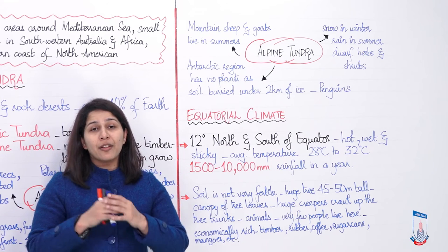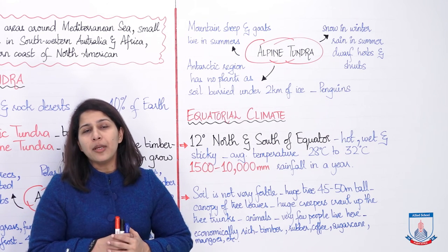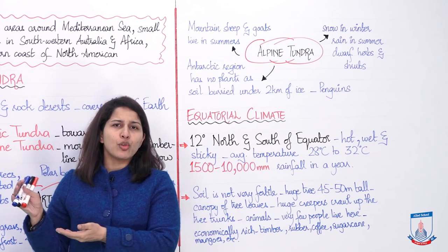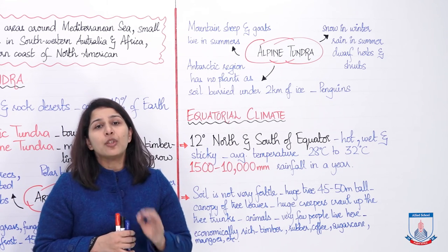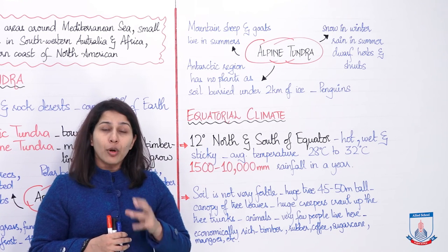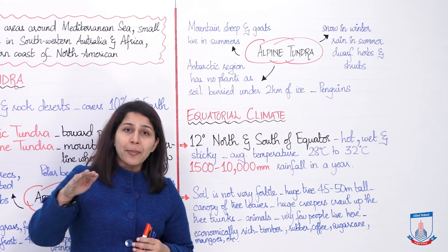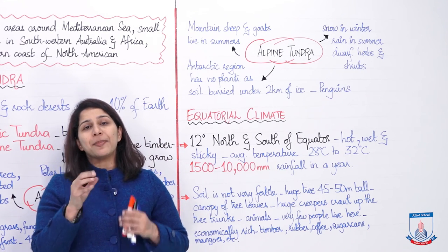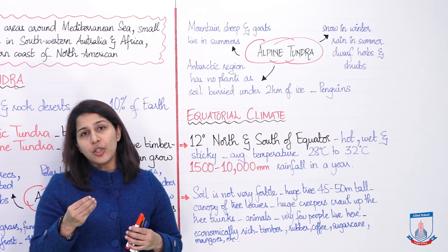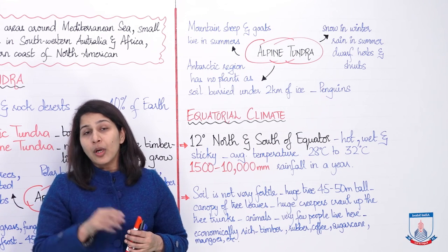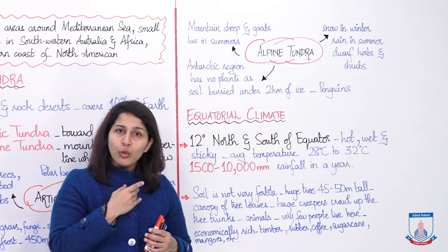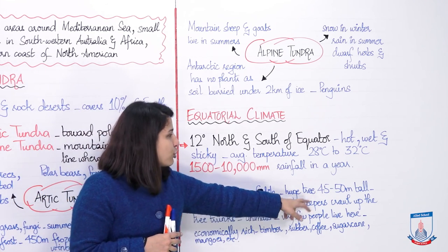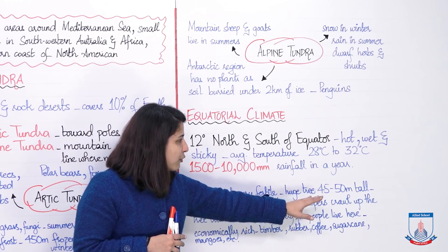Jab zyada se zyada baarish hoti hai, toh baarish ke paani ke saath jo top soil hoti hai woh beh jaati hai. Top soil mein saare minerals aur zaruri cheeze hoti hain jisse plants grow karte hain. Jab itni rainfall hogi toh woh top soil beh jaayegi — isliye the soil is not very fertile. Sirf huge trees can grow — 45 to 50 meter tall — with completely straight trunks.